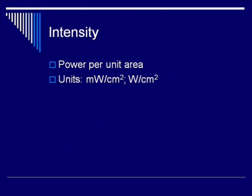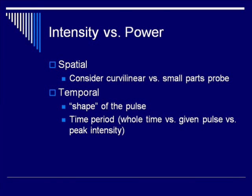Even power doesn't tell us everything we need to know, so here's another quantity: intensity, which is essentially power per unit area, with units of milliwatts divided by area. Depending on how you describe intensity, it has a lot of advantages over power. One thing it can tell us is more about spatial considerations — for example, how energy is distributed across the beam.